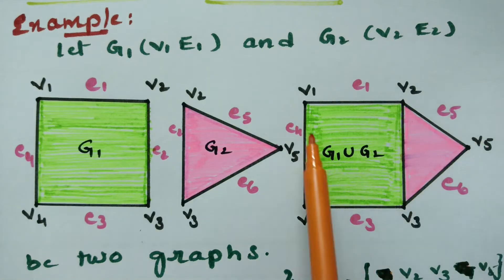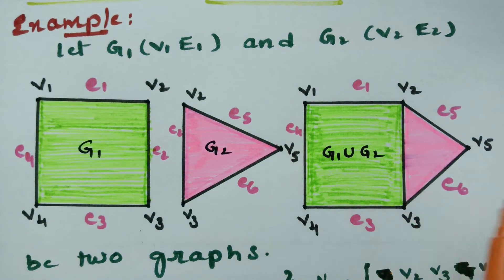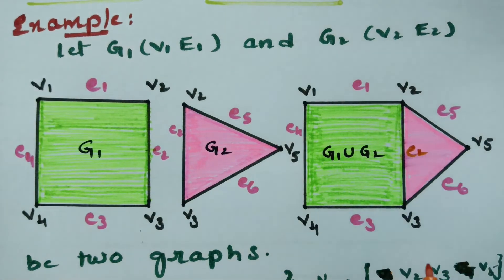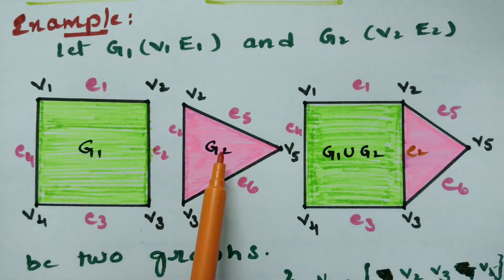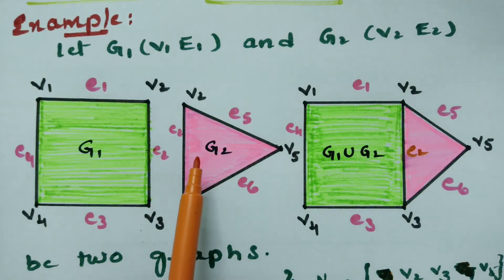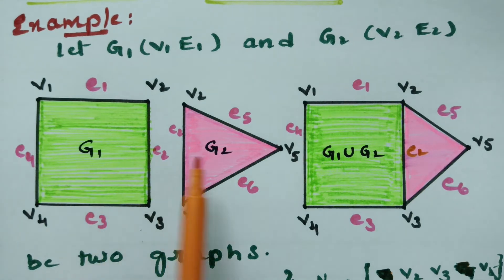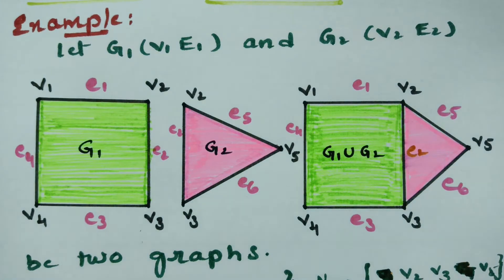So the union graph has five vertices: v1, v2, v3, v4, and v5, and six edges: e1, e2, e3, e4, e5, and e6. This is g1 ∪ g2 obtained by clubbing all vertices and edges together. This is the union of two graphs.